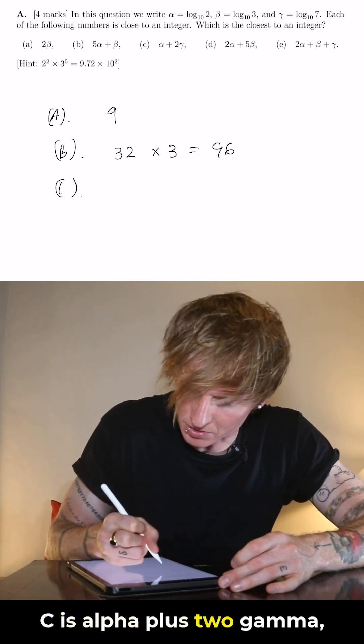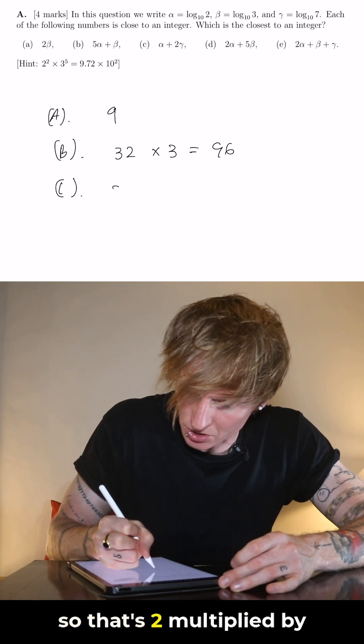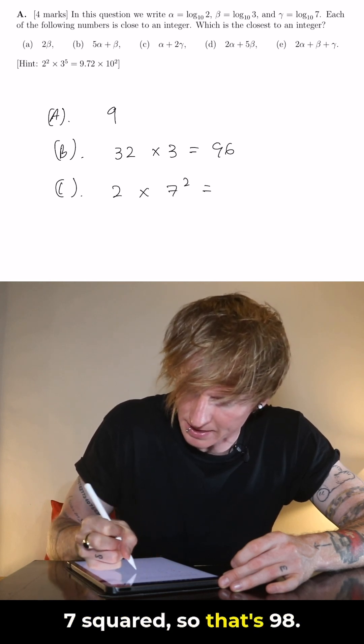C is alpha plus 2 gamma so that's 2 multiplied by 7 squared so that's 98.